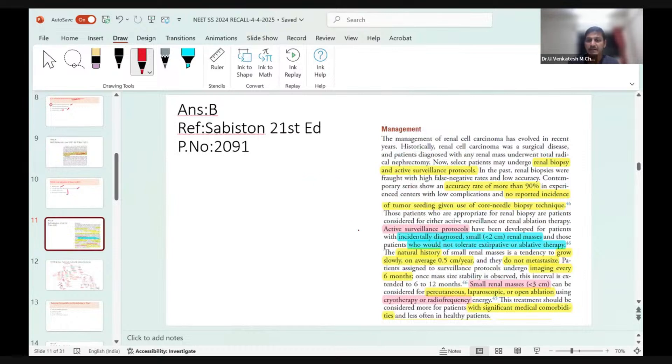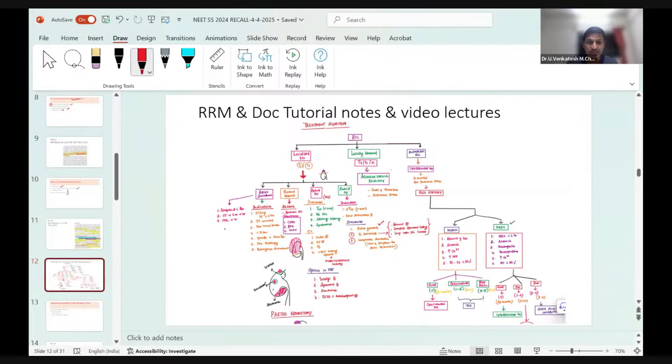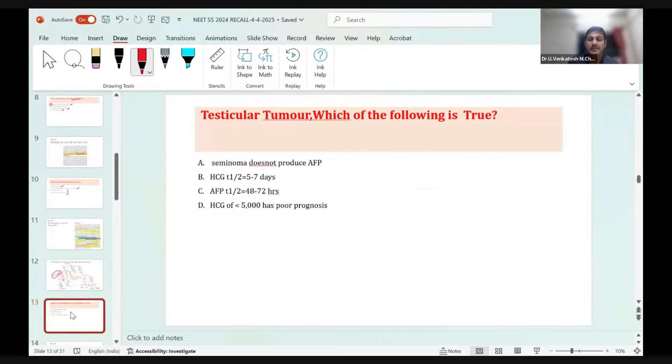The reference is in Sabiston regarding renal biopsy and active surveillance protocols. Active surveillance is usually for small renal masses less than 2 centimeters who do not tolerate any extirpative or ablative therapy. This is only for patients who cannot undergo renal ablative therapy, thermal ablation, or partial nephrectomy. For active surveillance, you have to confirm diagnosis with biopsy and keep the patient on regular follow-up.